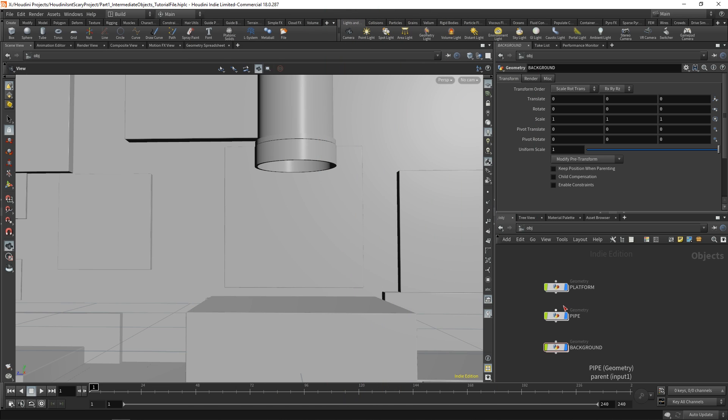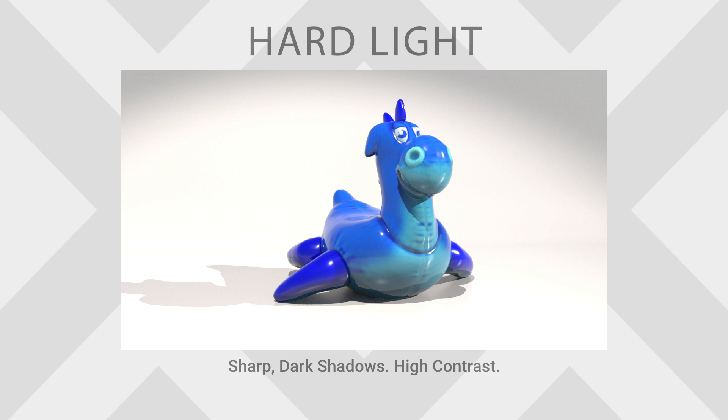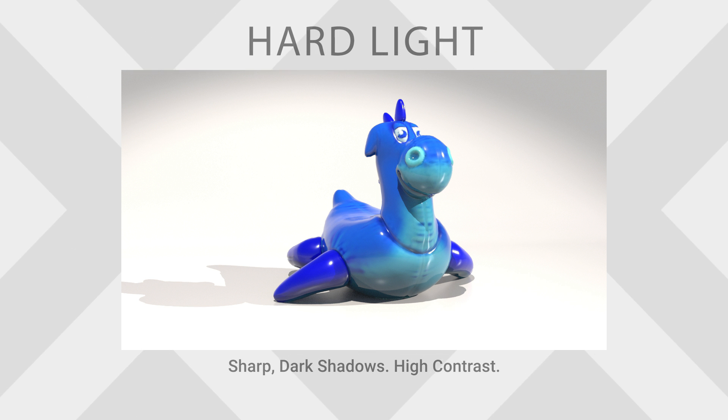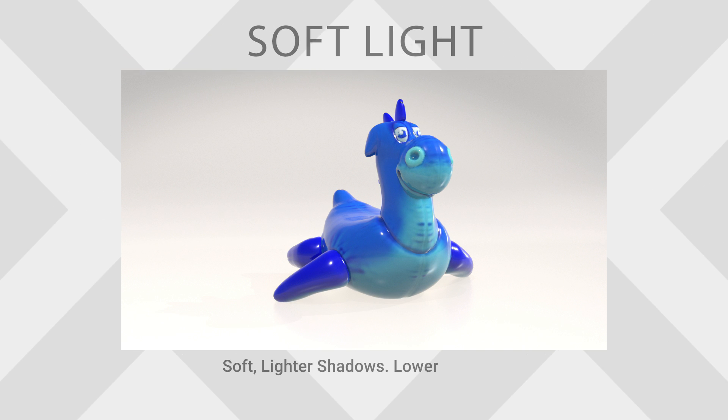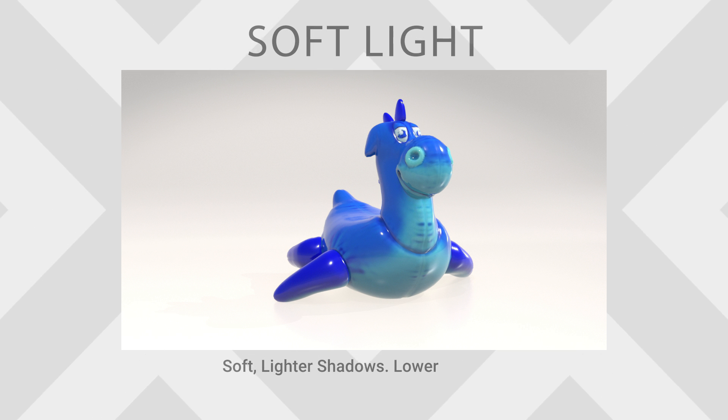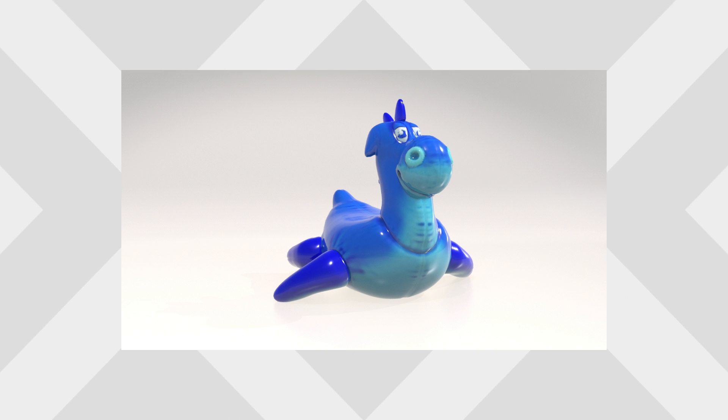Back in Houdini we have our platform, pipe, and background from where we left off — you can download this file below. The type of lighting we're going for is very soft, not harsh shadows; think early evening or late afternoon lighting.